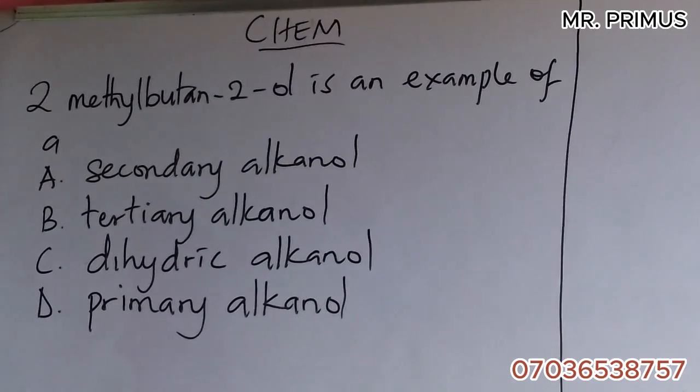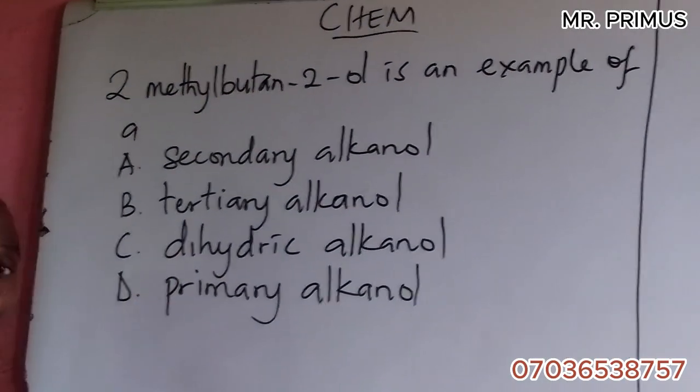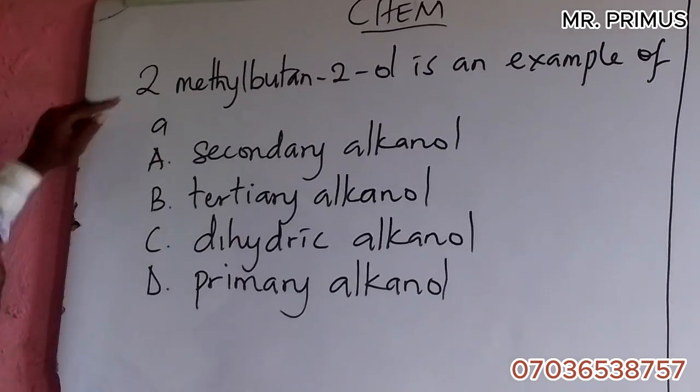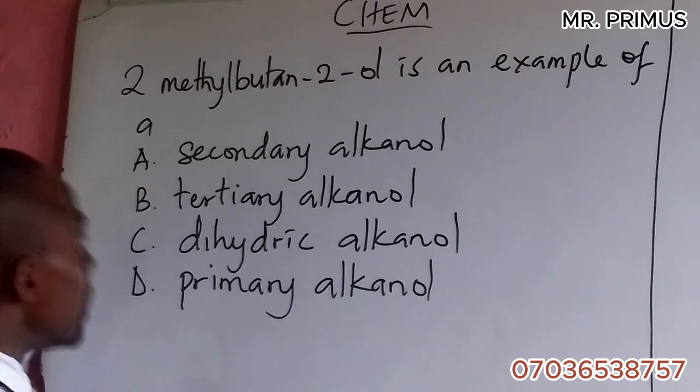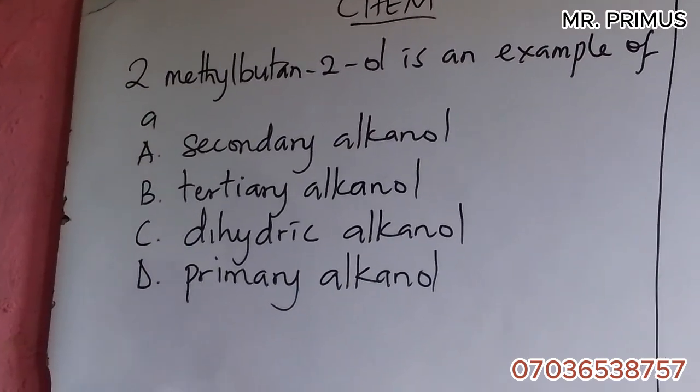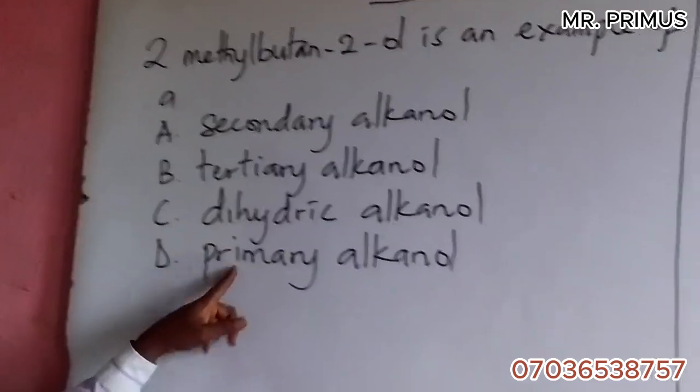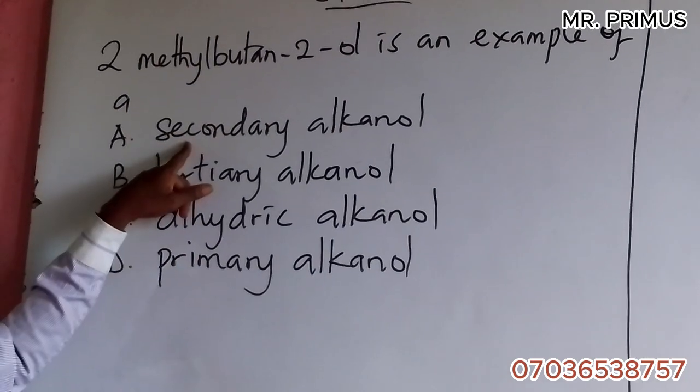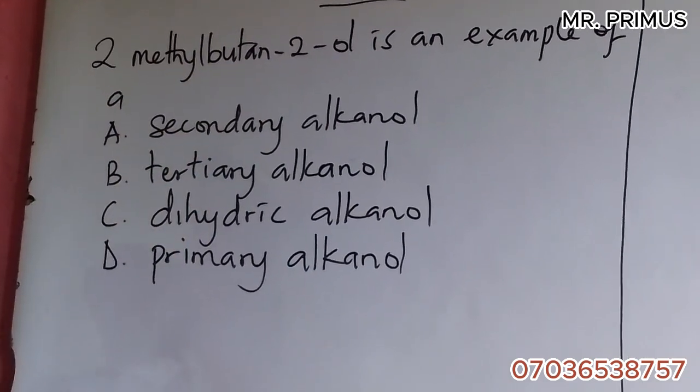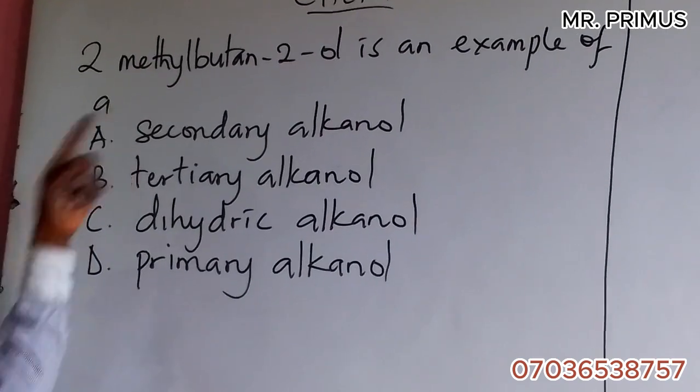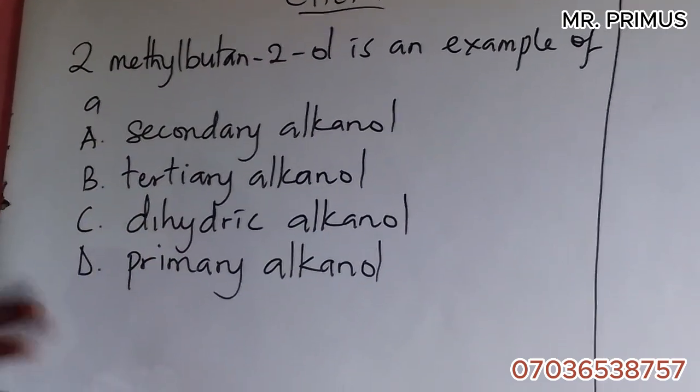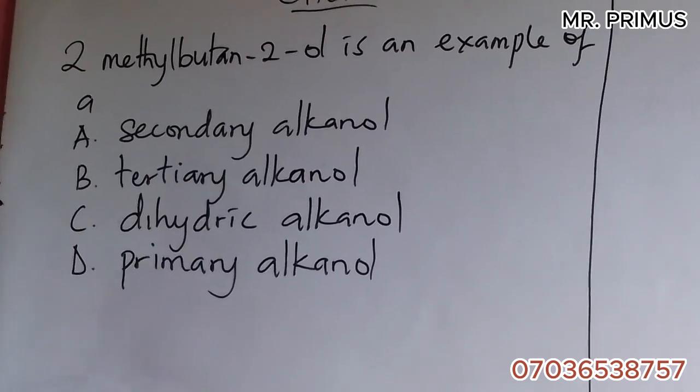Alright, let's look at this question. 2-methylbutan-2-ol is an example of: A. secondary alkanol, B. tertiary alkanol, C. dihydric alkanol, D. primary alkanol. These are the types of alkanols we have.